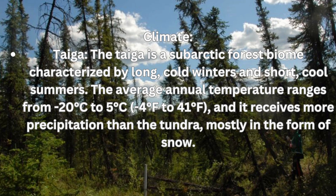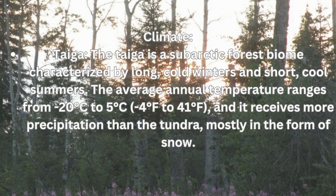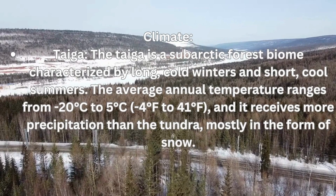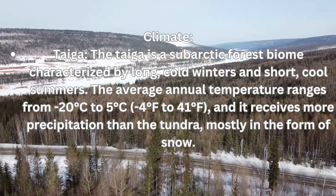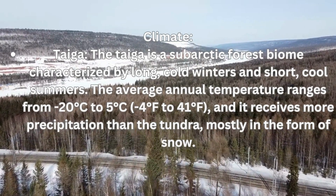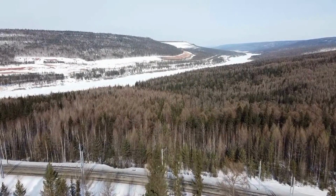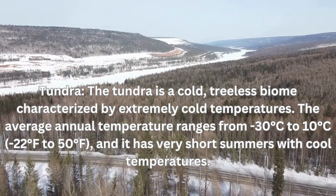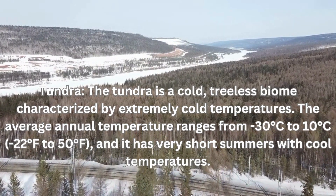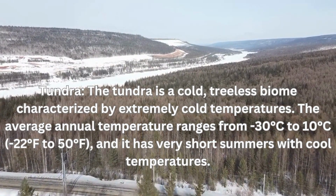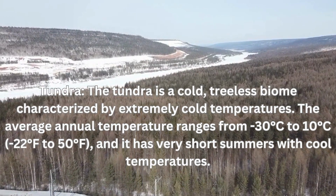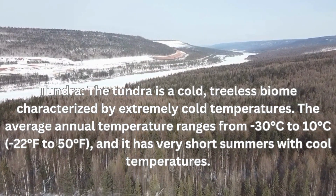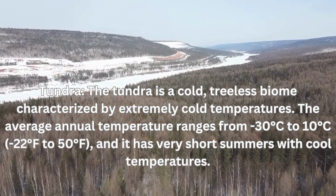Climate comparison: The taiga is a subarctic forest biome characterized by long cold winters and short cool summers. It receives more precipitation than the tundra, mostly in the form of snow. The tundra, on the other hand, is a cold treeless biome characterized by extremely cold temperatures and very short summers.